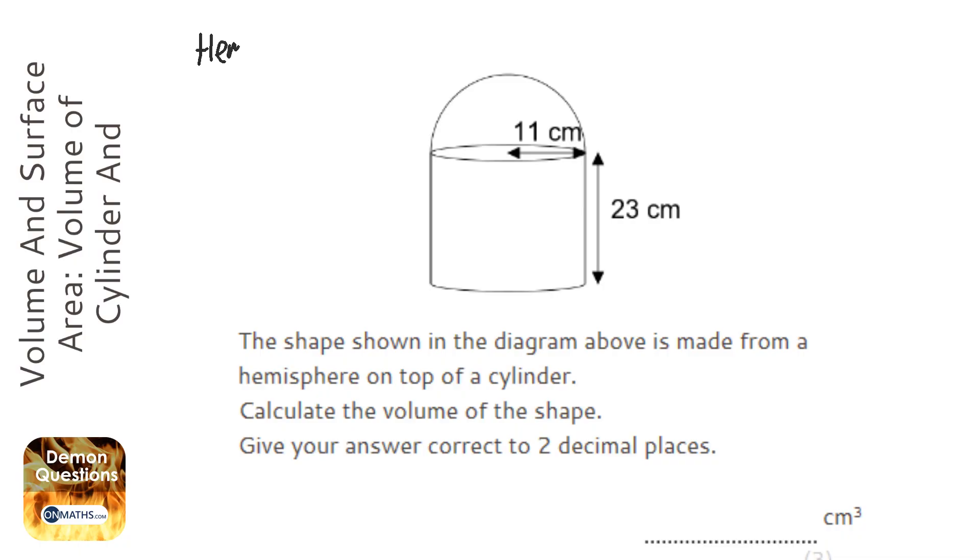So the hemisphere, which I'm just going to say hemi, is going to be the volume of a sphere and then we're going to halve it. So the volume of a sphere is 4 thirds pi r cubed, but then we're going to divide it by 2 because it's half a sphere. So 4 thirds pi times the radius is 11 cubed, divide by 2, and I should really put that into brackets.